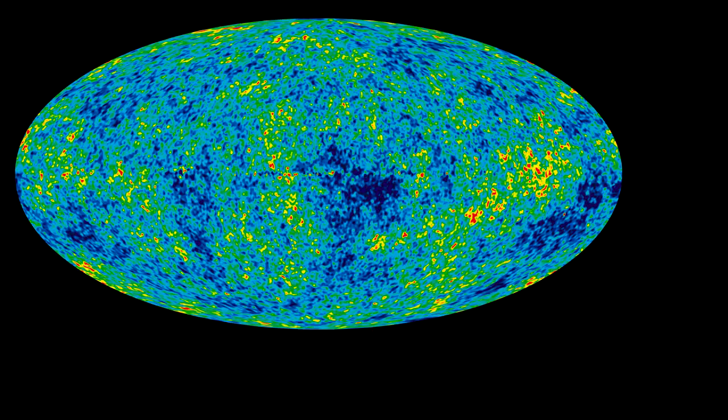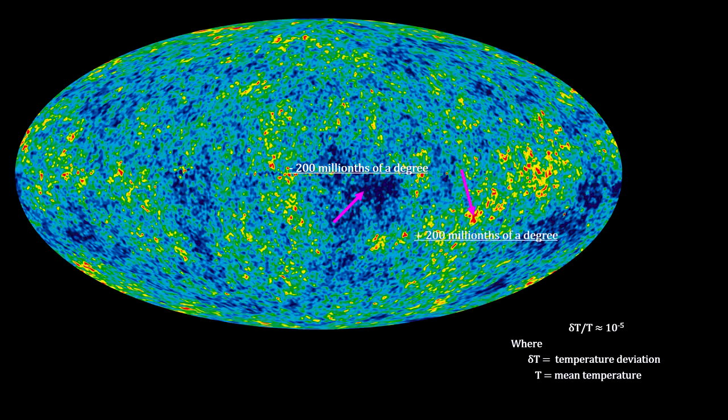The image uses color to show variations from the average with blue for minus 200 millionths of a degree through green and yellow to red, which represents plus 200 millionths of a degree. That temperature deviation comes to one part in 100,000.